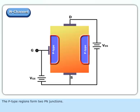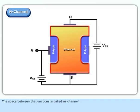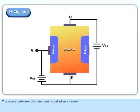The P-type regions form two PN junctions. The space between the junctions is called the channel.